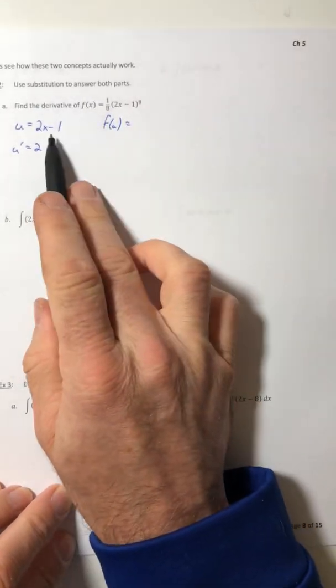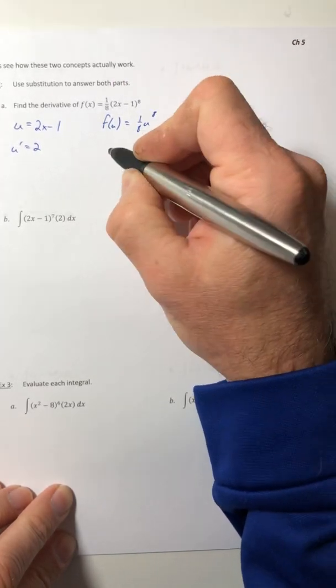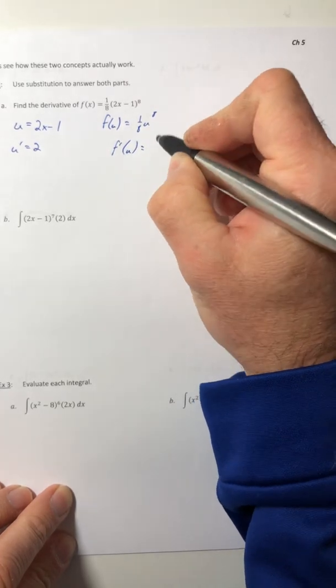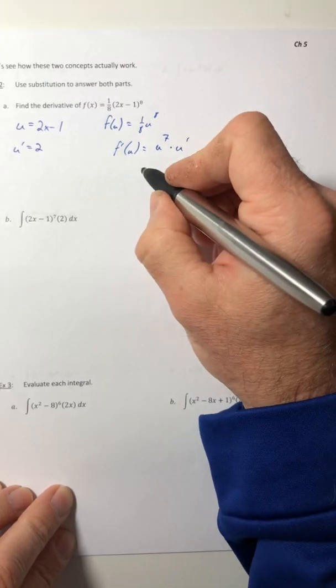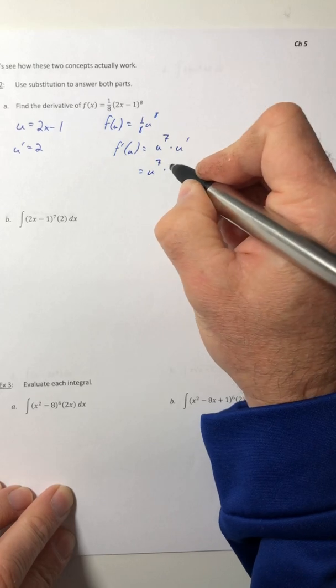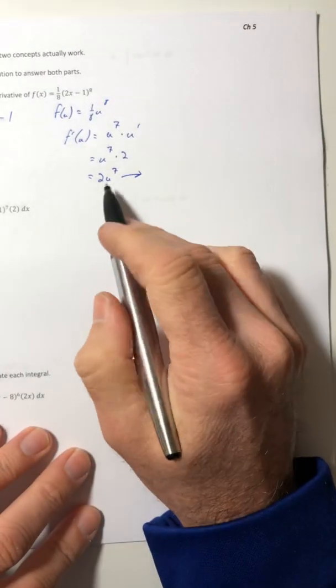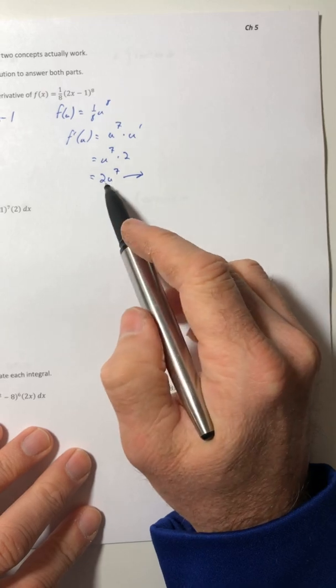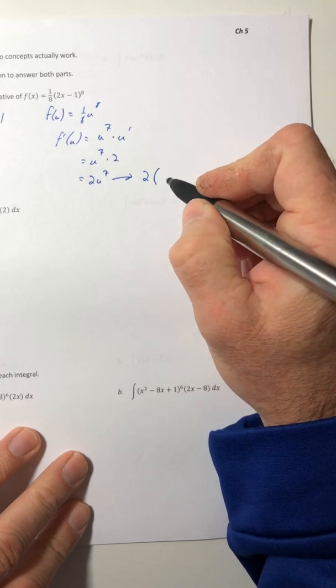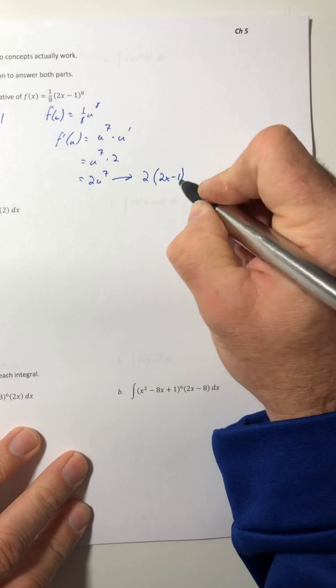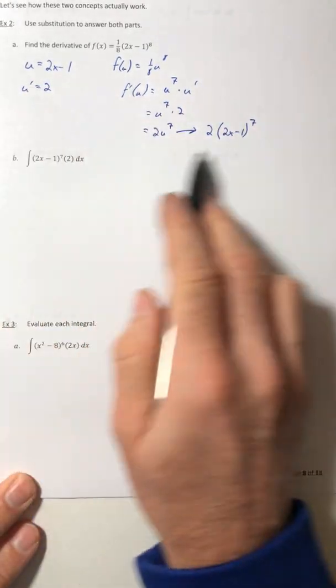You substituted. You got the function in terms of u instead of x. So the 2x minus 1 becomes u. And then we could find its derivative. That would be u to the seventh, but then we had to multiply by that u prime. So 2u to the seventh. And you didn't stop there. Once you took its derivative after that u substitution, then you had to reverse it. You had to get everything back in terms of x. So 2 times 2x minus 1 to the seventh. That's how it worked with derivatives.